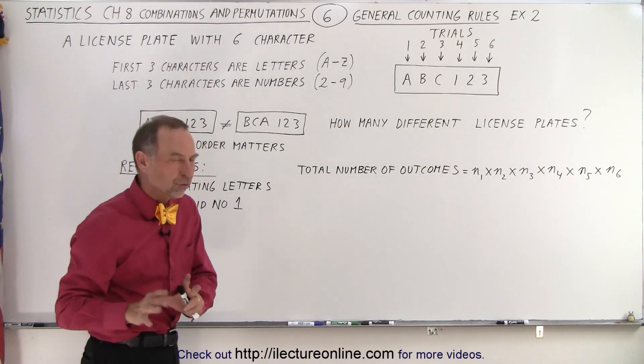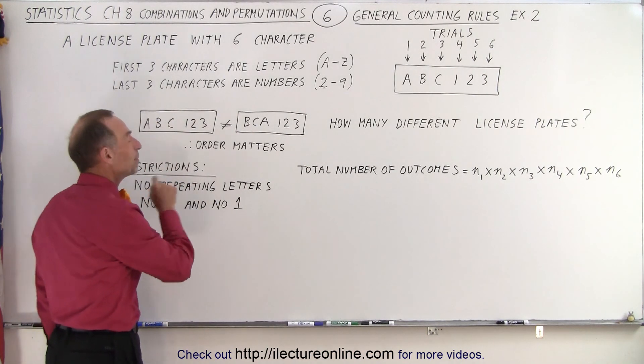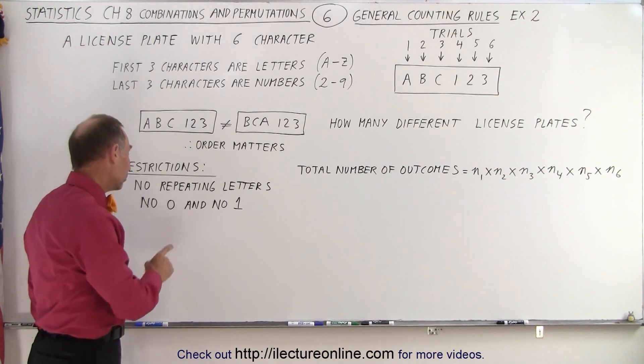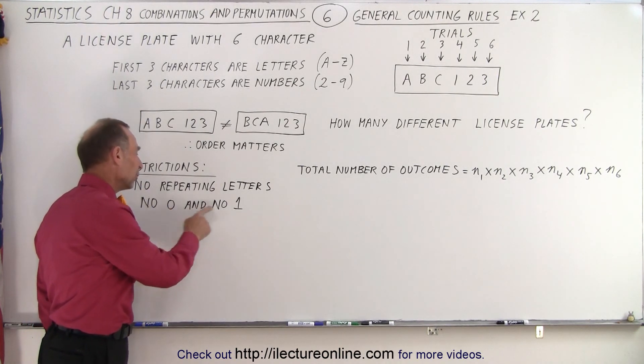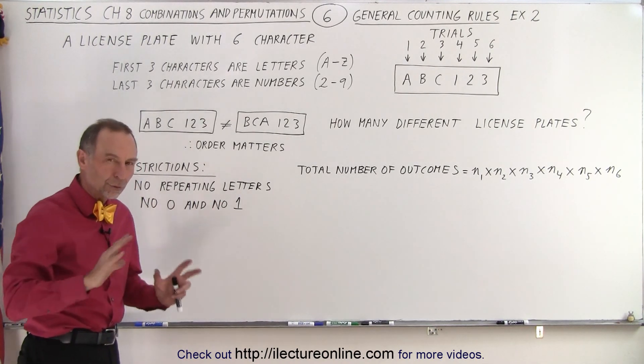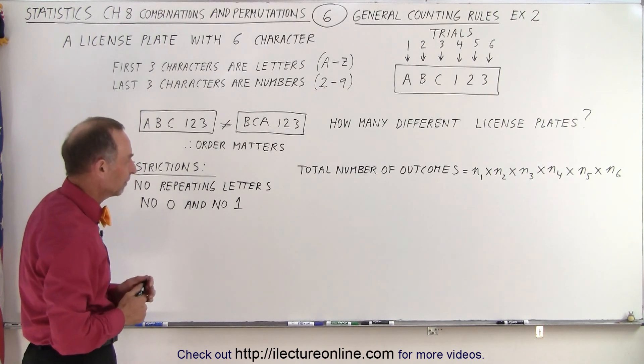But now we have some restrictions. Notice the restrictions are that we cannot use repeating letters. If the letters used once, you cannot use it again. And we're not going to use the numbers 0 and 1 because they look too much like an O and an I. So to decrease confusion, we're going to place some restrictions on there.